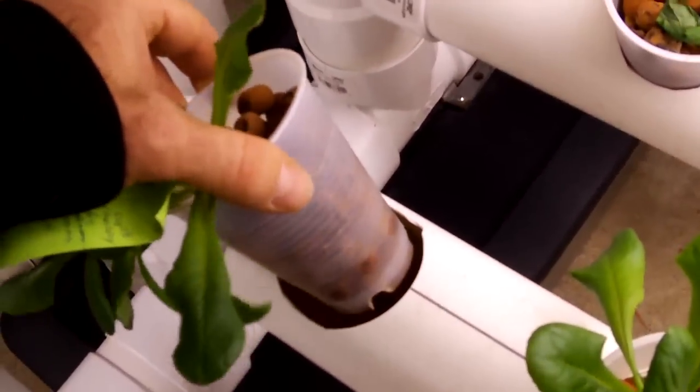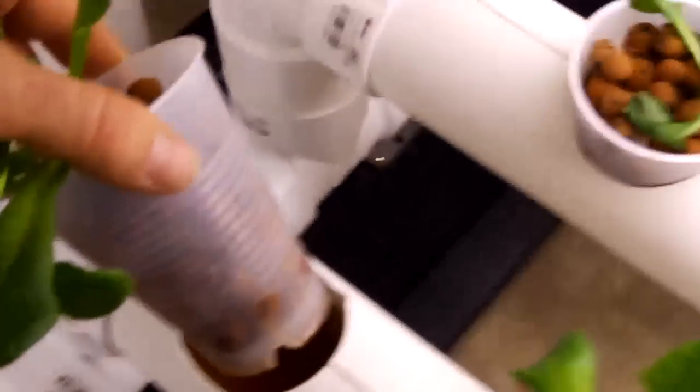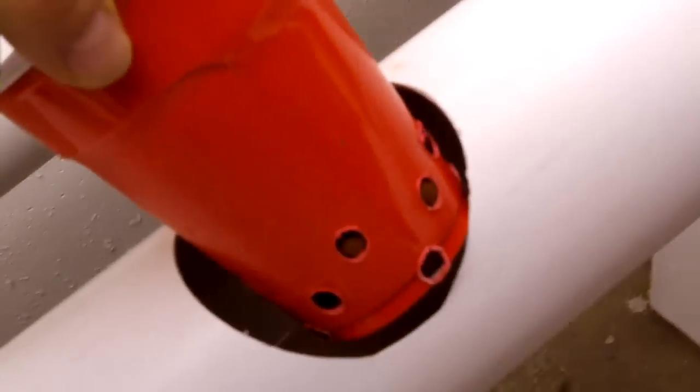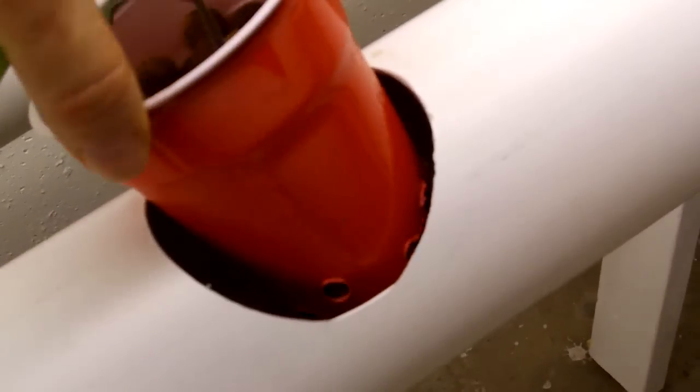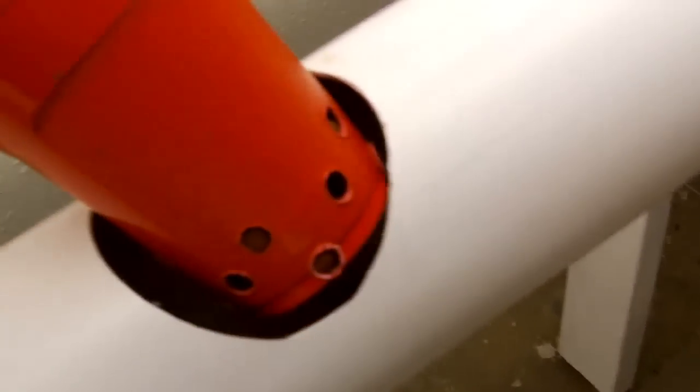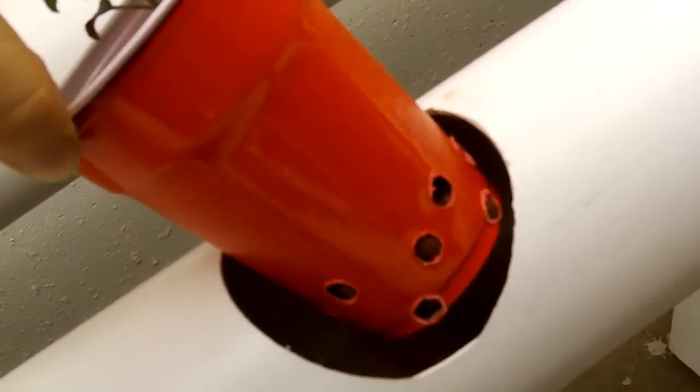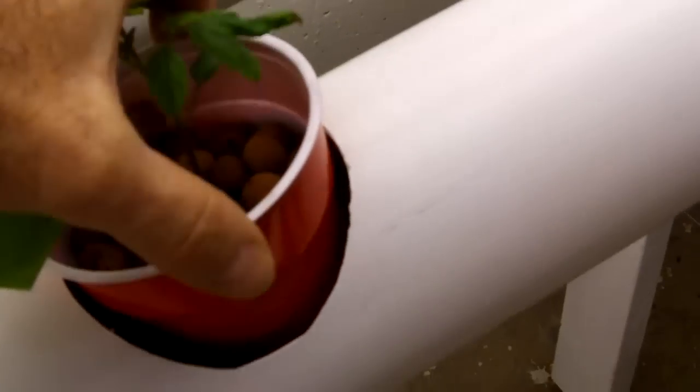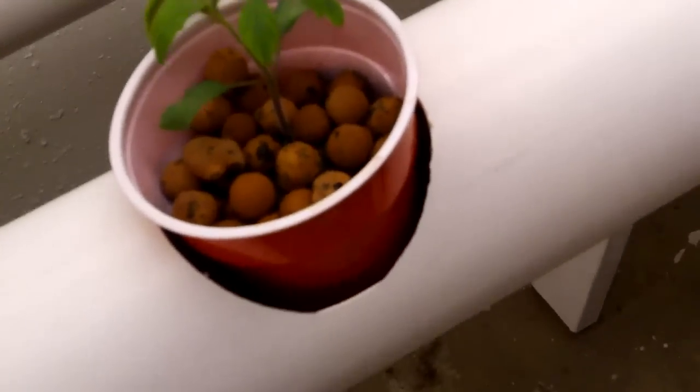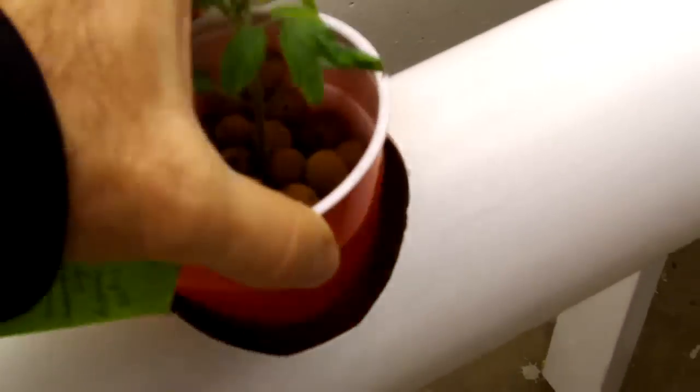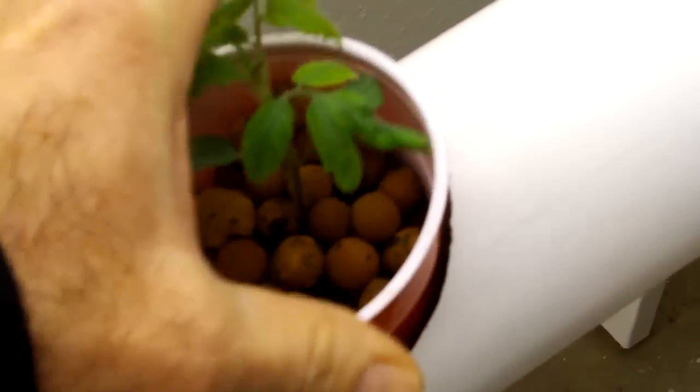These cups are I believe 6 ounce cups. And like these over here, I've taken a soldering iron and just melted holes in there so the water has some place to go. And the roots will eventually come out of the bottom, but we'll get back to that a little later on and show how the roots have developed. And they'll eventually just hang down in this water in this nutrient solution and soak up whatever food they need.